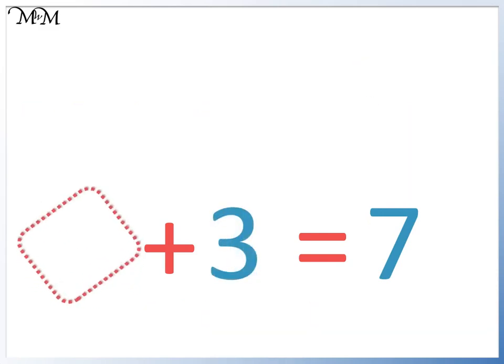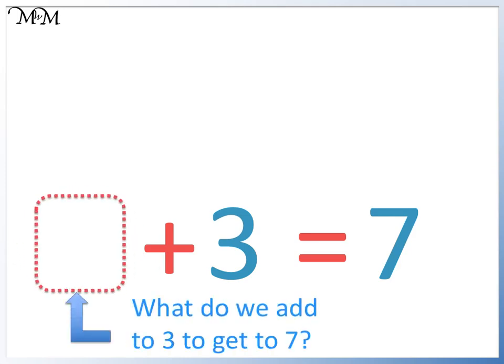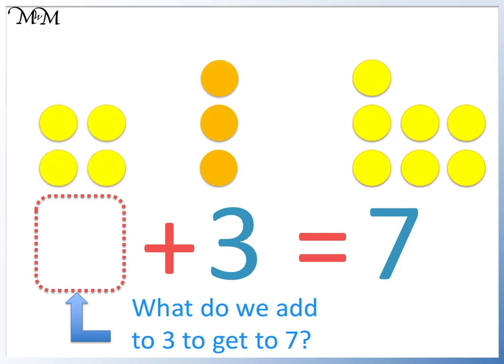What do we add to 3 to make 7? Here is 3, here is 7. 1, 2, 3, 4, 5, 6, 7. We have added 4. 7 take away 3 also leaves 4.